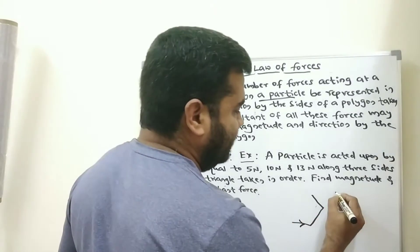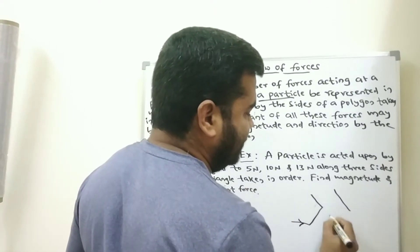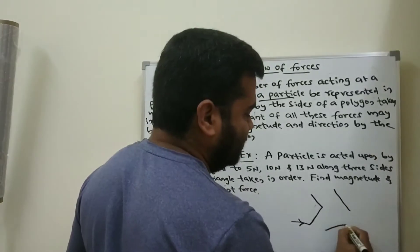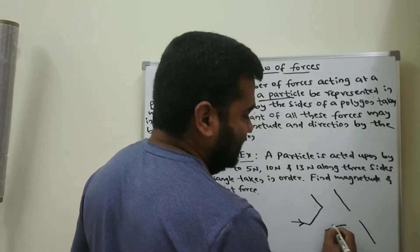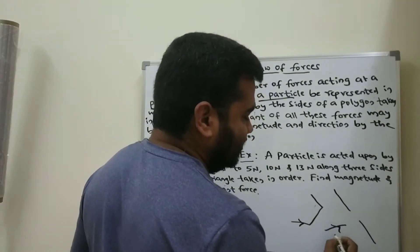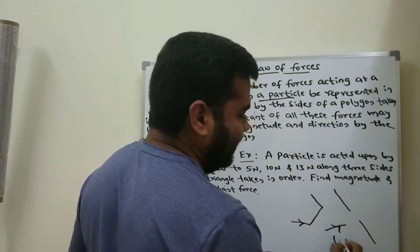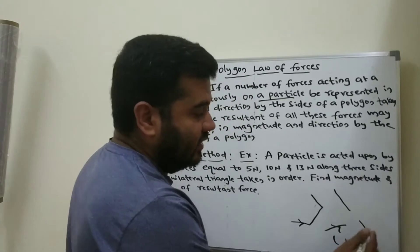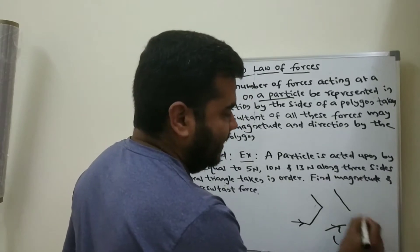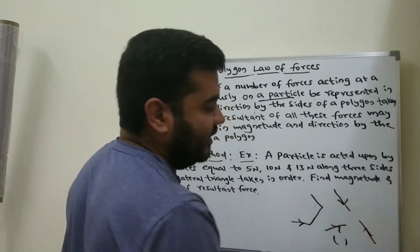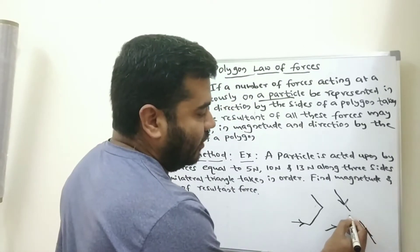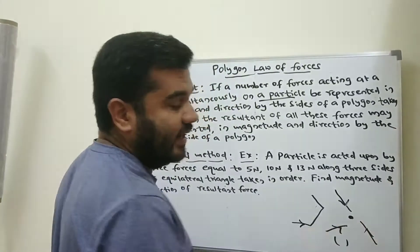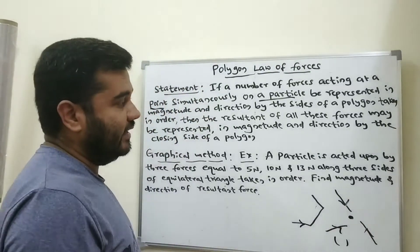For example, one force here, one force here, and one more force here — each represented in terms of magnitude and direction. They all have some magnitude and some direction, and they are acting at a point simultaneously.